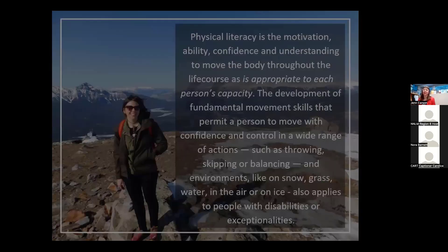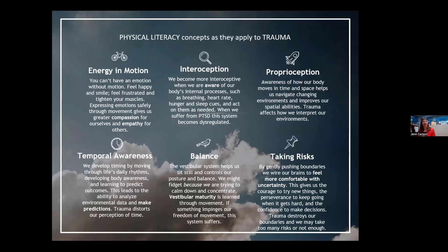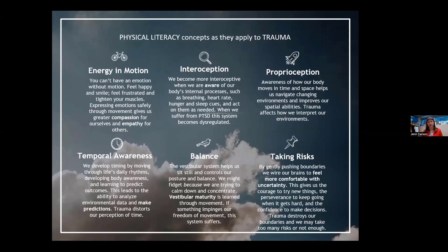How does physical literacy tie in with trauma? One concept is energy and motion. You can't have an emotion without some sort of motion in your body. When you're happy, your face lights up and you feel more buoyant. When you're frustrated, you're holding your breath and clenching your muscles. When we express our emotions safely through movement, that gives us greater compassion for ourselves and empathy for others. When we're blocked and can't do that, our systems become dysregulated.